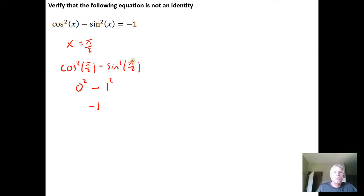So for pi over two radians, this equation works. The left side is equal to the right hand side. But if it's an identity, it has to work for every value of x that you can think of.